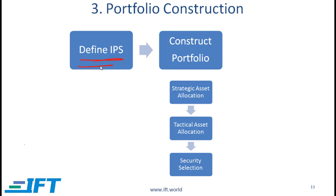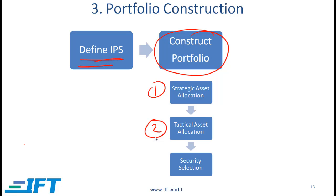We have defined the IPS, now we need to construct the portfolio. At a high level, portfolio construction involves a strategic asset allocation, which says how we allocate our funds across different asset classes. Then we might do a tactical asset allocation, and finally we need to do some security selection. We are going to focus on strategic asset allocation and then talk a little bit about tactical asset allocation.